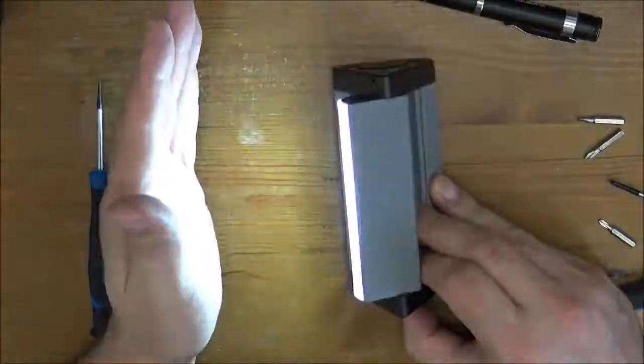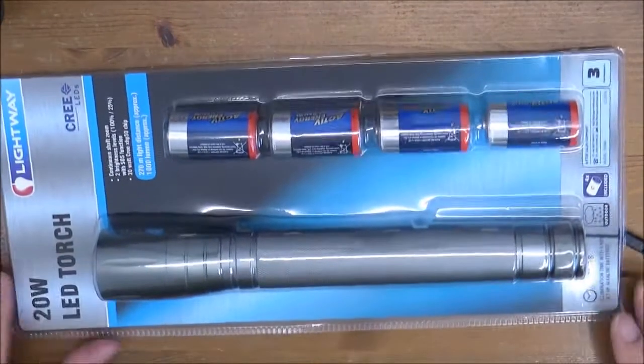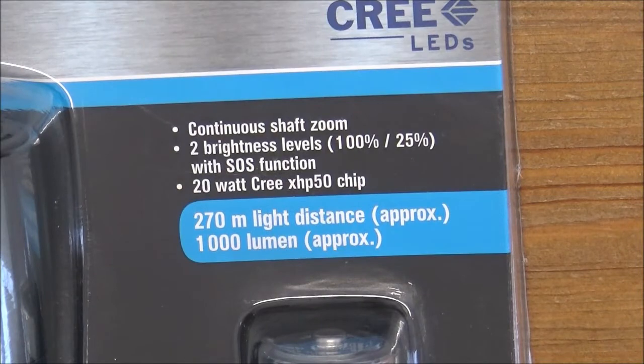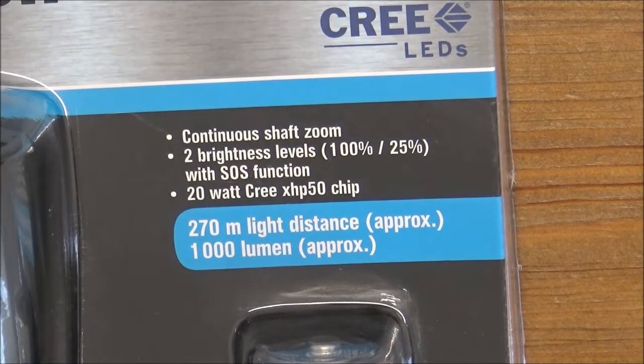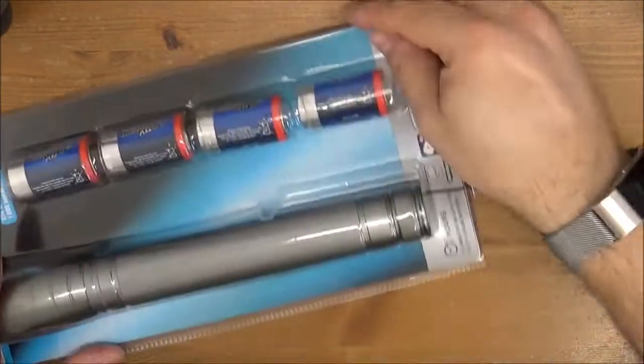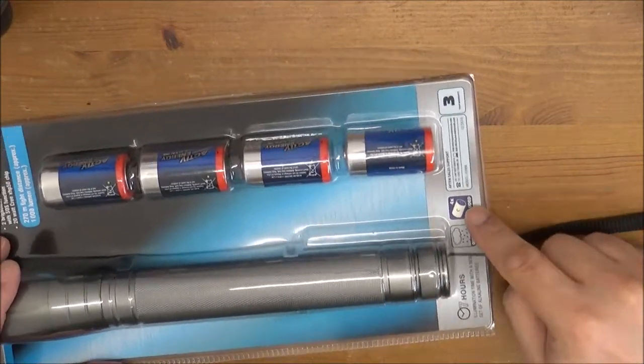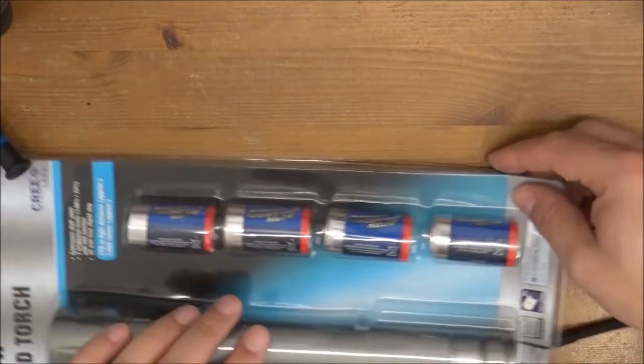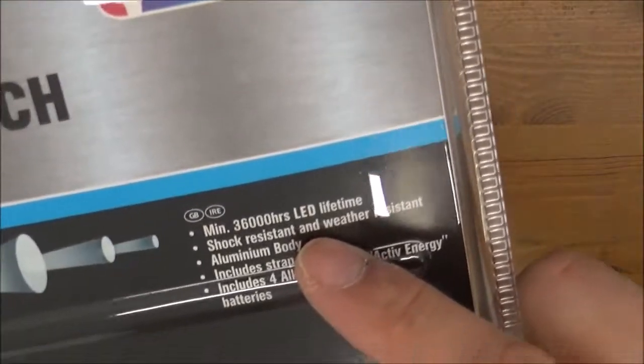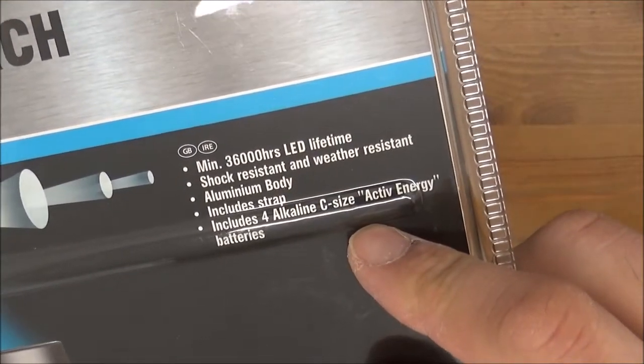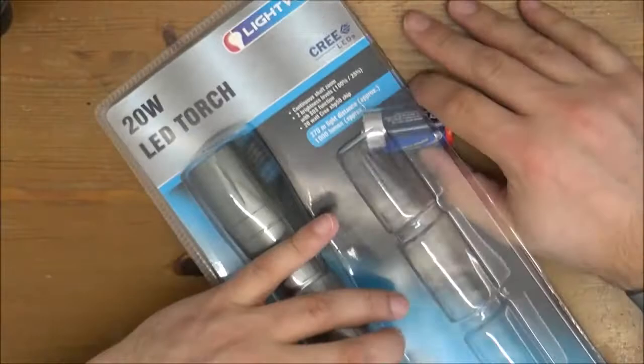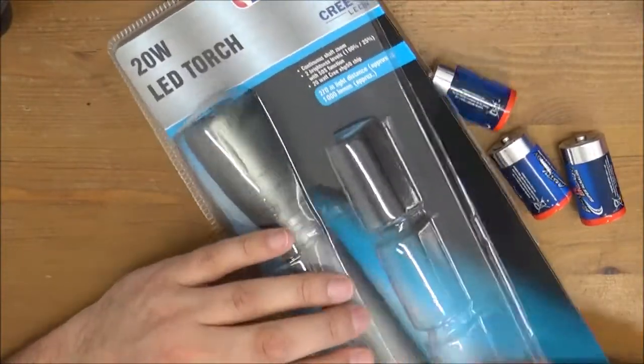Finally we're just going to look at this 20 watt Aldi light torch. To be fair, this is quite a beastie. Another thing that's really nice about all of this is everything has come with batteries included. This one says it lasts for I think seven hours on its lower setting, has a three-year warranty. It's shock resistant, weather resistant, IP65 rated aluminum body.